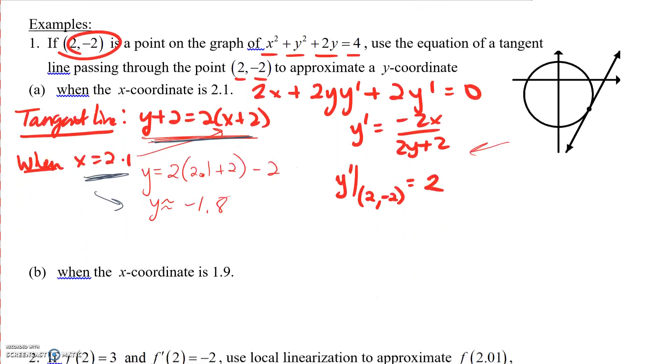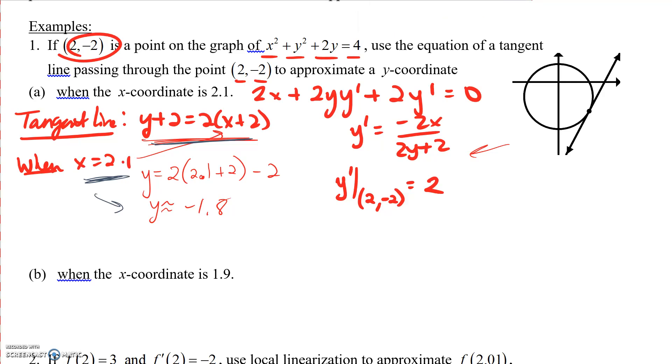Let's suppose I want the x-coordinate, same problem, when we're at 1.9. All we're going to do is plug in 1.9 for x in the tangent line equation. We get negative 2.2.